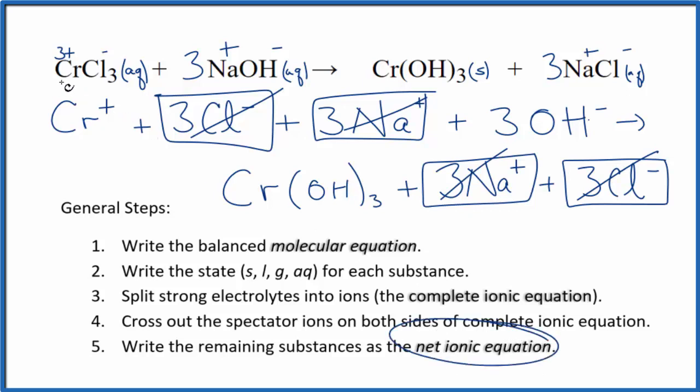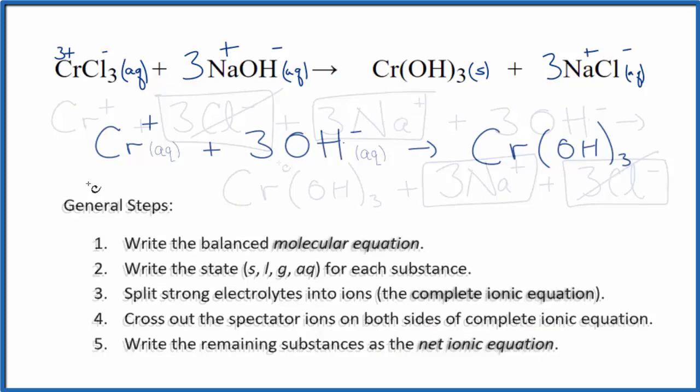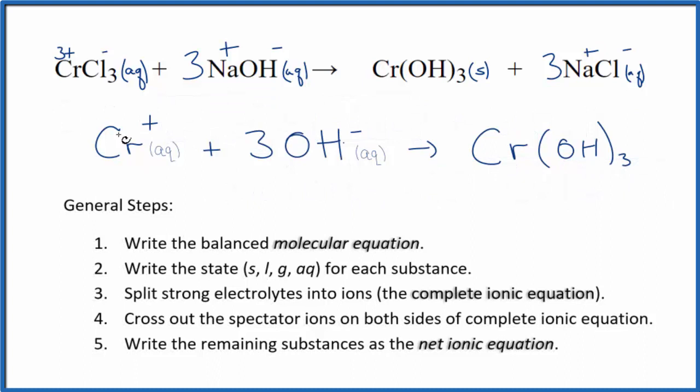What's left, that's the net ionic equation for CrCl3 plus NaOH. I'll clean this up and write the states. We'll have our net ionic equation. So this is the net ionic equation for chromium three chloride plus sodium hydroxide.